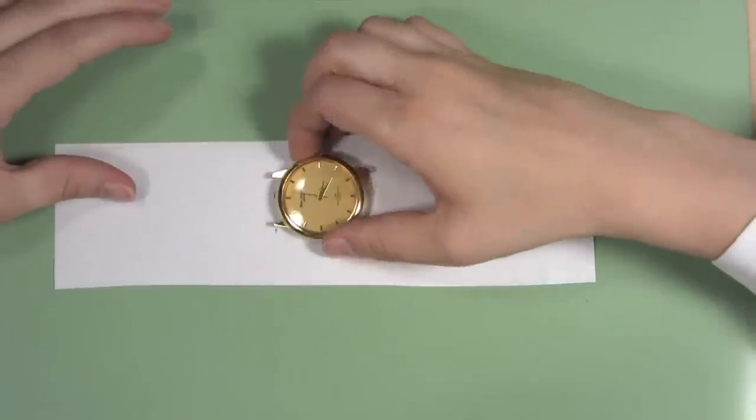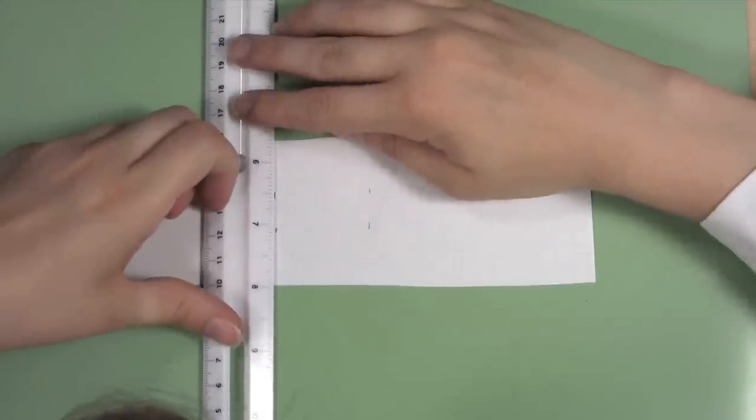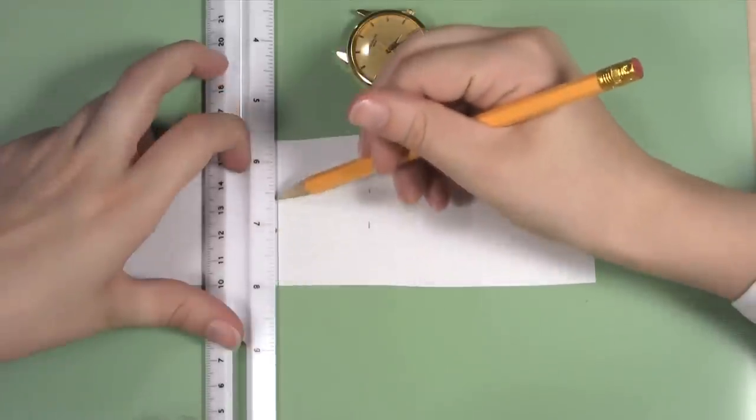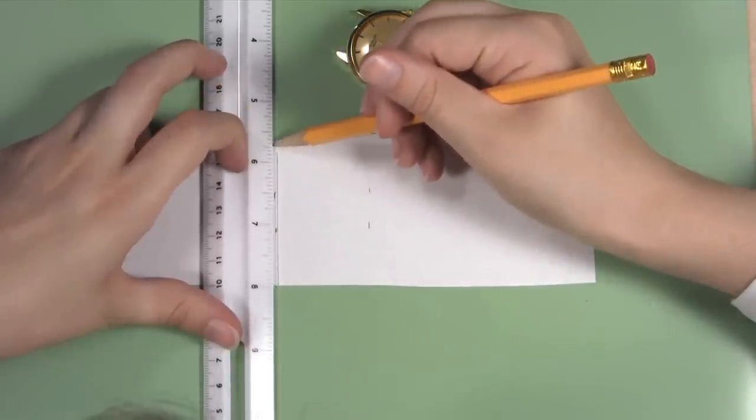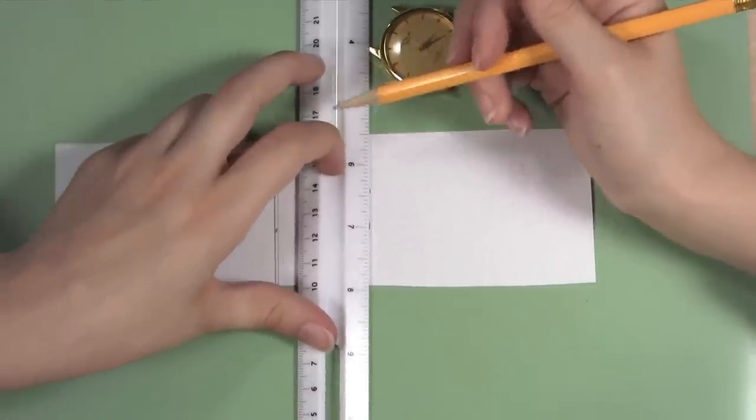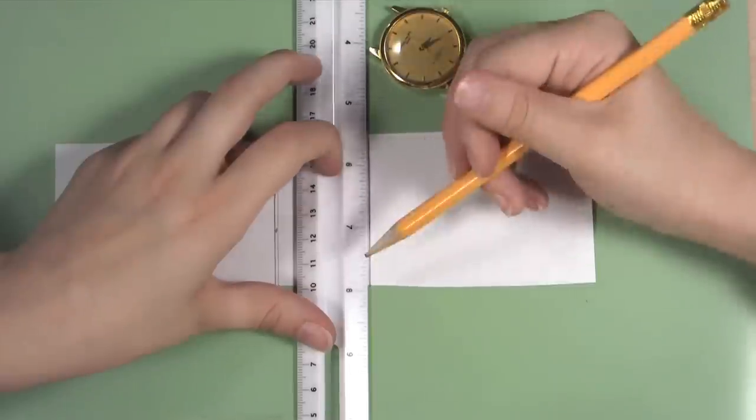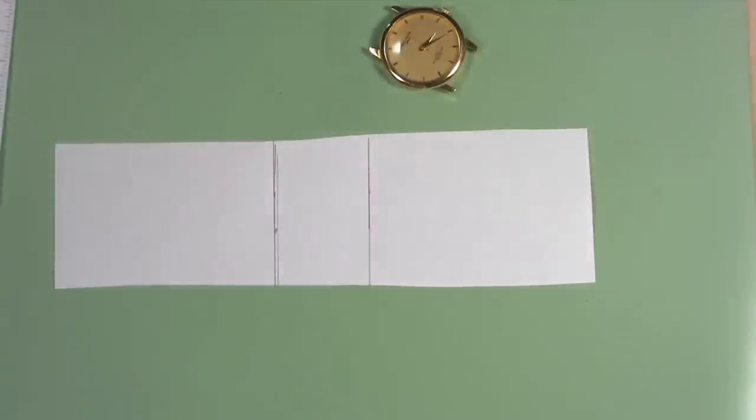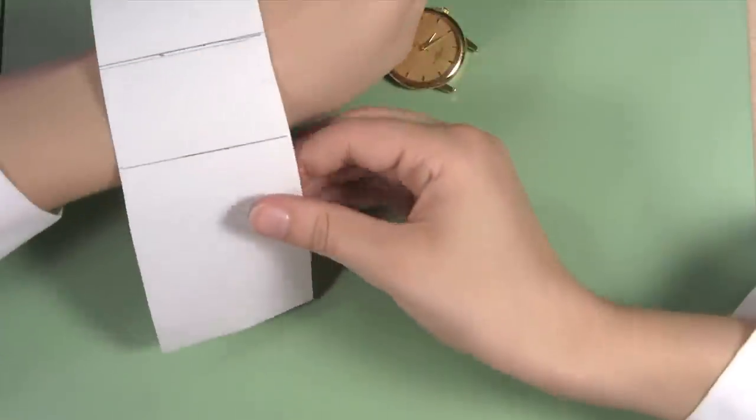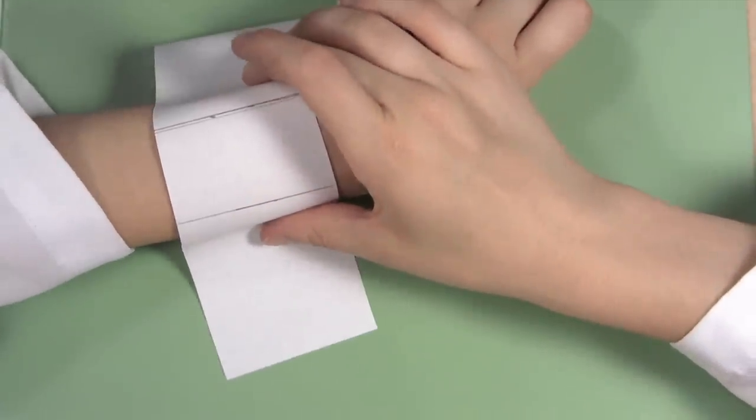Using your ruler, draw a straight line between the marks you made to indicate where the watch case would be. Once you have done that, take the paper and center the section that would be the watch case on your wrist like you would do with a real watch.